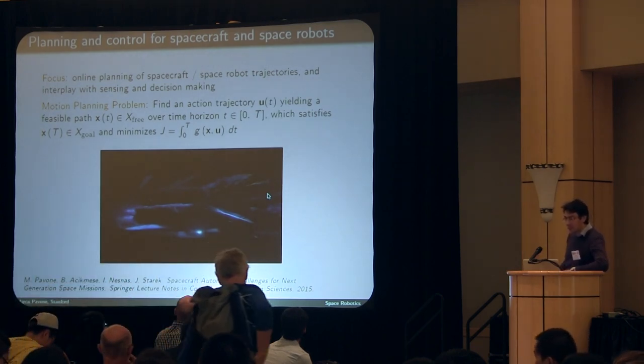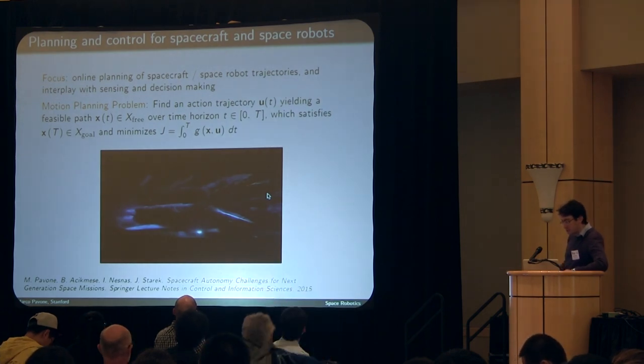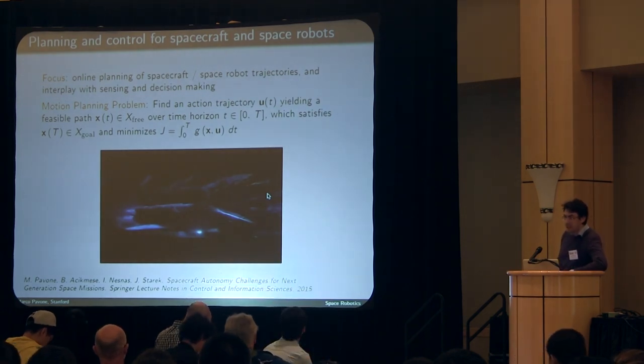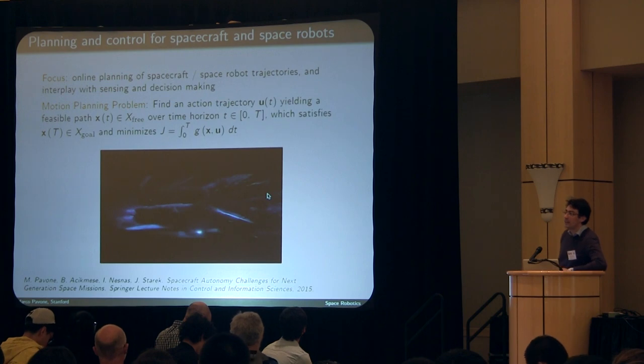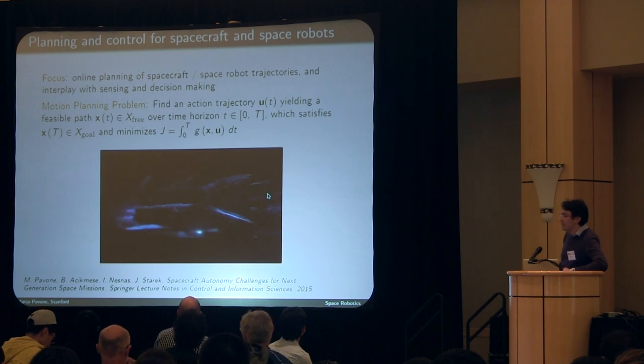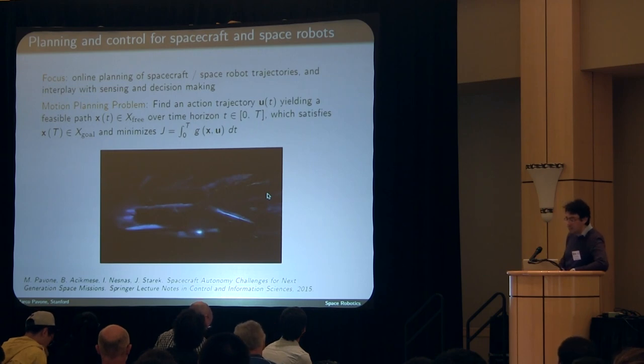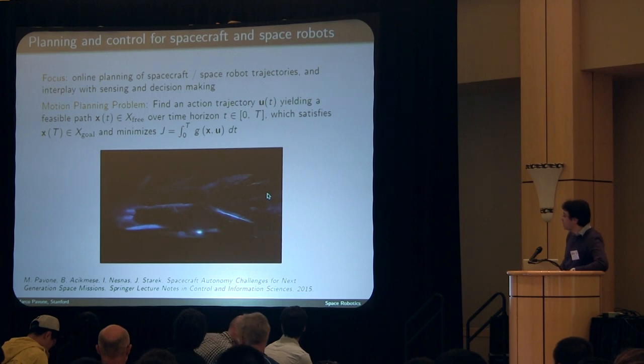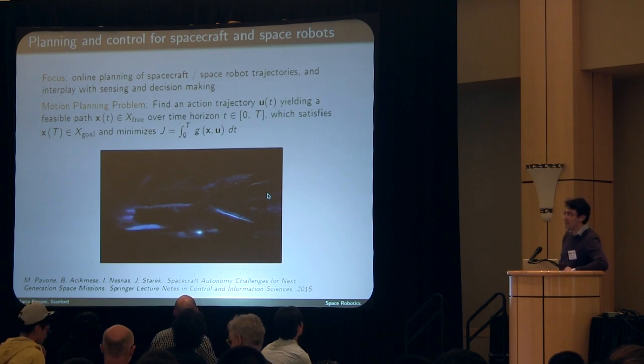I know most of you are already familiar with the motion planning problem, but just to make sure we are all on the same page, essentially the motion planning problem entails solving a problem of going from a starting point to a goal region in a way that we avoid obstacles, satisfy the dynamical constraints of our vehicle, and possibly optimize a certain cost function which has an additive structure.